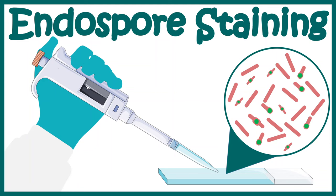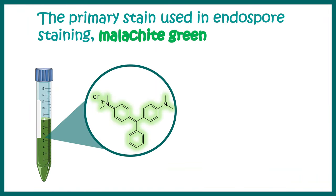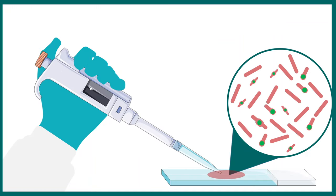Endospores can be visualized by endospore staining — a stain known as malachite green is used. The endospores would be stained green, and the vegetative cells would be stained pinkish. By looking at this stain, we can determine whether a particular patient sample contains endospores or not.